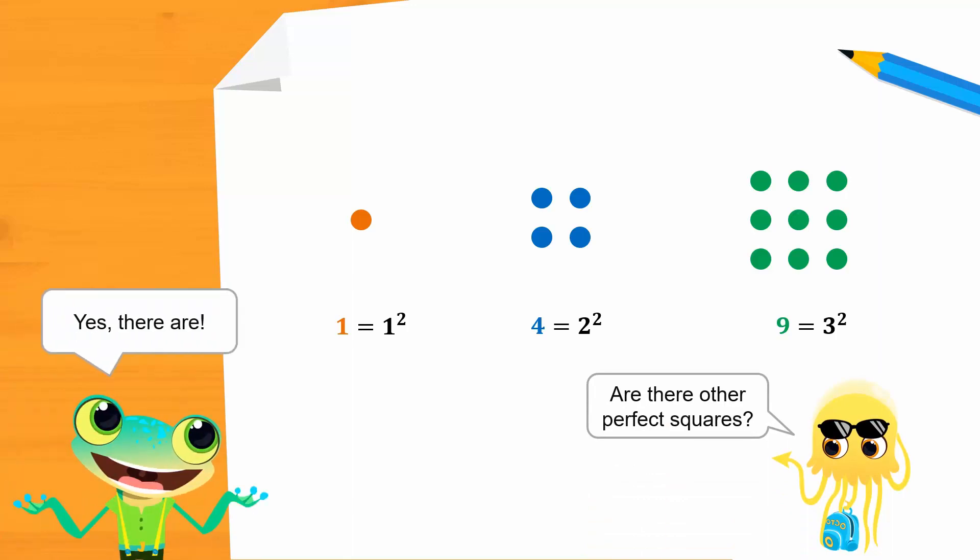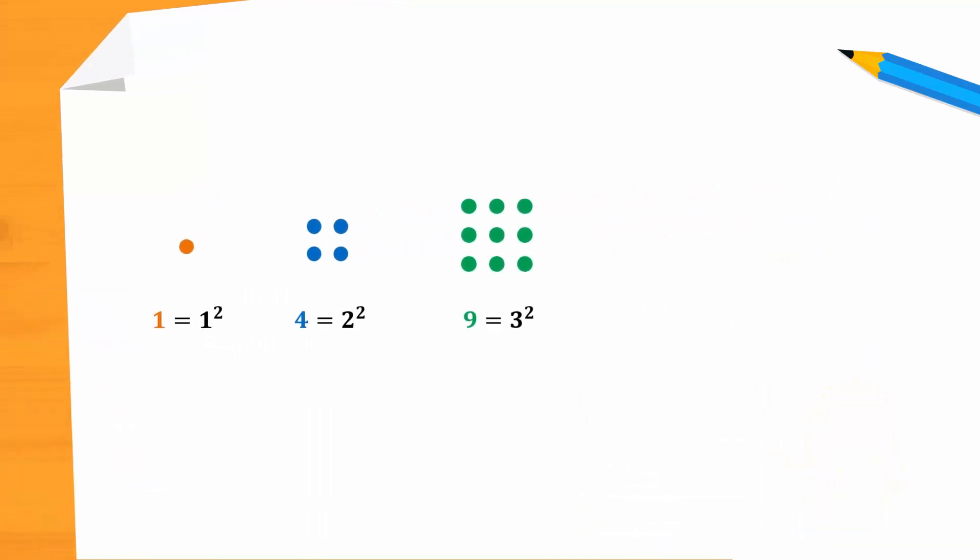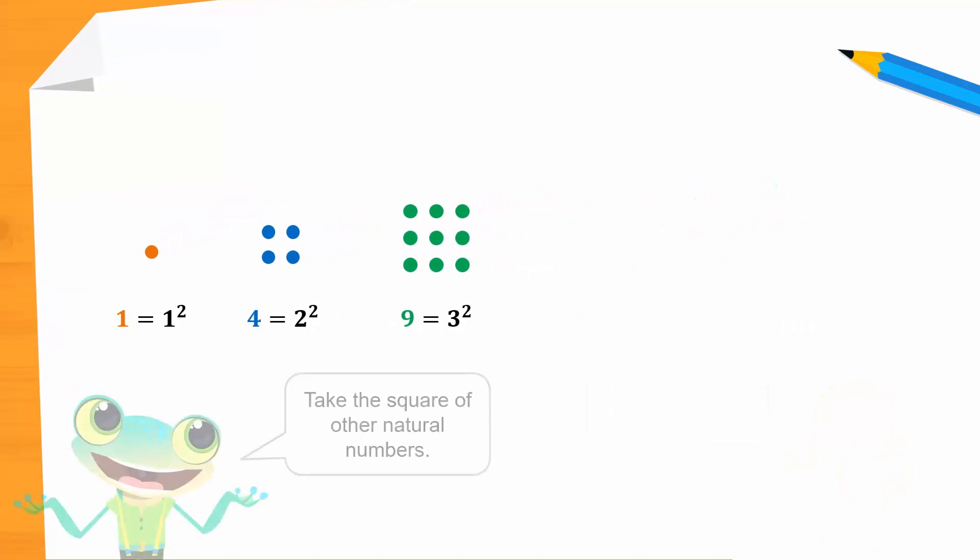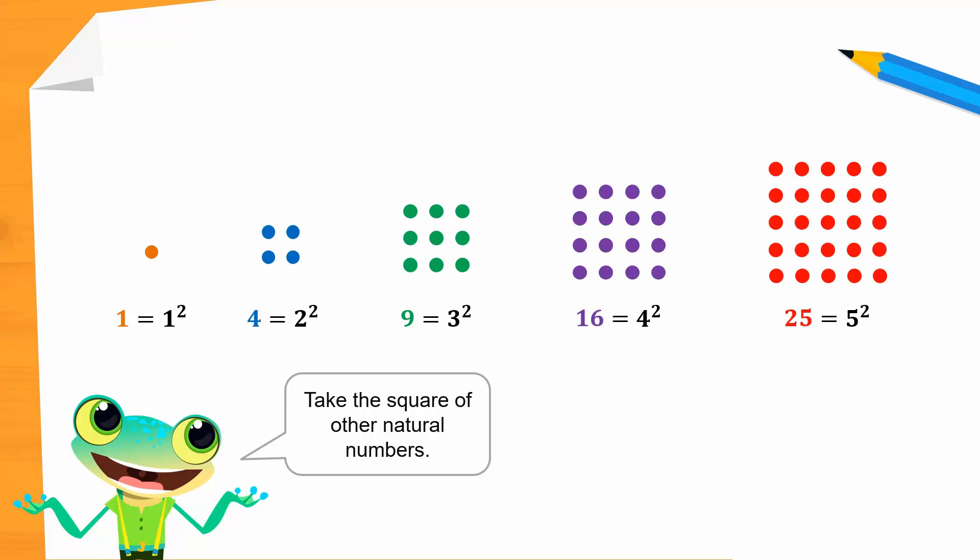We can form more perfect squares by finding the square of other natural numbers. For example, 4 squared is 16, while 5 squared is 25. So both 16 and 25 are perfect squares.